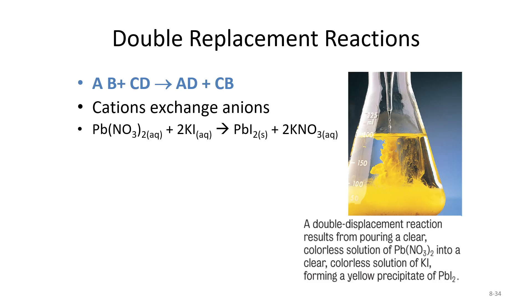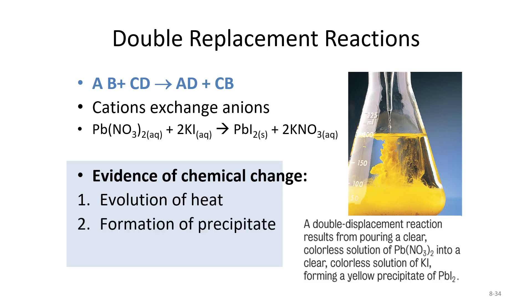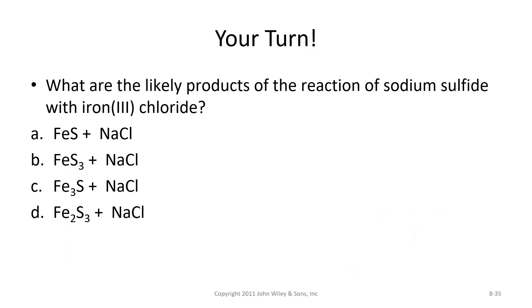Double replacement reactions are kind of like trading spouses — a spouse swap — where the anions and cations switch places so they have different partners. Here's an example: lead and potassium switch places to become lead iodide and potassium nitrate. We know a chemical change has happened based on evolution of heat, formation of a precipitate — you can see the chunky solid forming — or formation of gas bubbles.